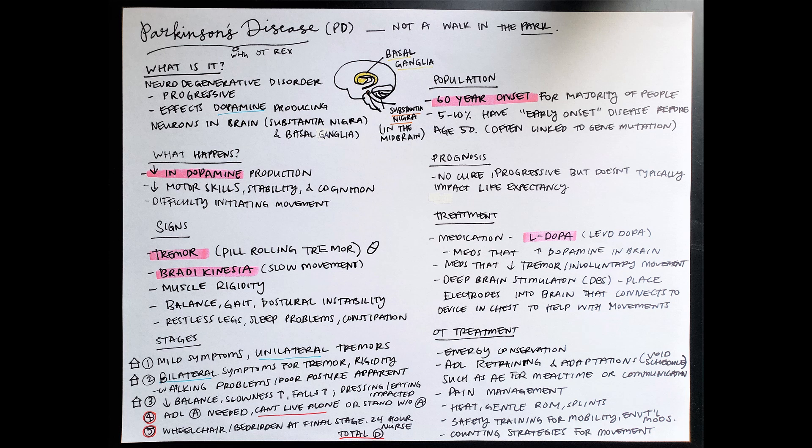But the difference between stage one and stage two is that when you get to two, the symptoms become bilateral. They're still able to live at home, as you can see, but the tremors become on both sides as well as the rigidity. So this is when you see walking problems as well as poor posture. And that becomes much more apparent at stage two.